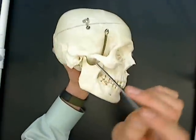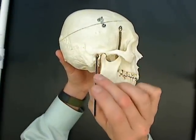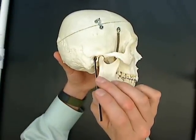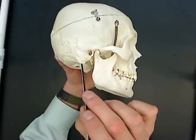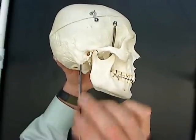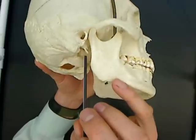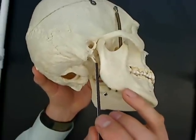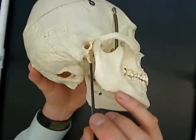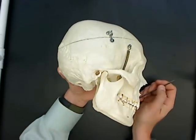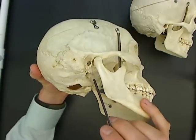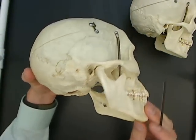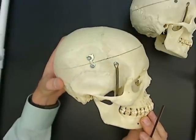Moving on with the temporal bone — this is the external auditory meatus. This is the mastoid process of the temporal bone. And this little thing sticking out inside here, that's the styloid process — a piece of bone that sticks right down. A lot of skulls have those missing. Let's see if we can find one on this other skull. The styloid process has been broken off. The plastic skulls that we have have it really well.